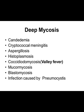The last type is deep mycosis, in which systemic involvement occurs. It includes many fungal infections like candidemia, cryptococcal meningitis, aspergillosis, histoplasmosis, coccidioidomycosis (also called valley fever), mucormycosis, blastomycosis, and pneumocystosis. Mainly all of these infections will involve the lungs.